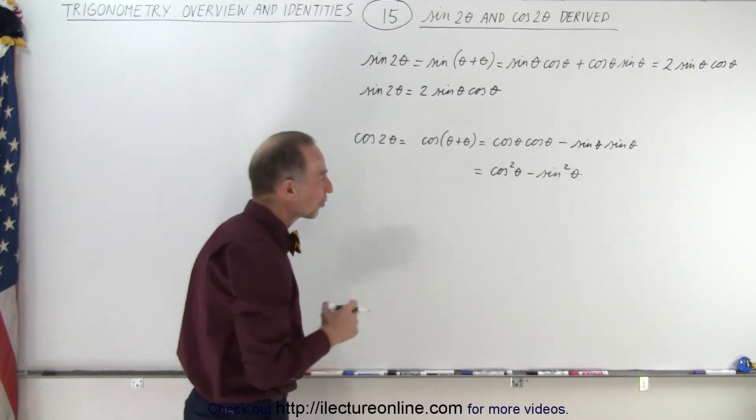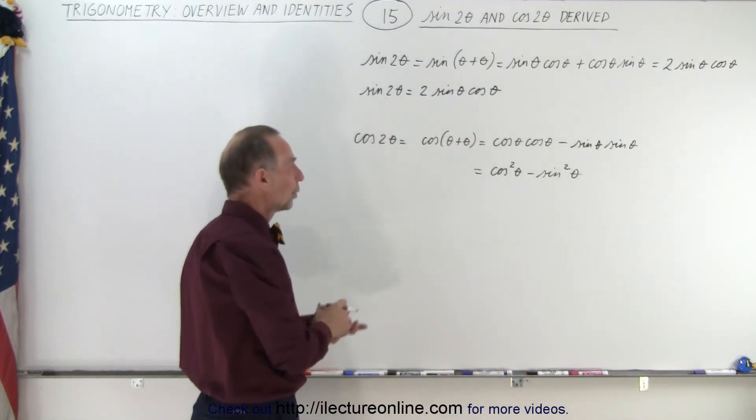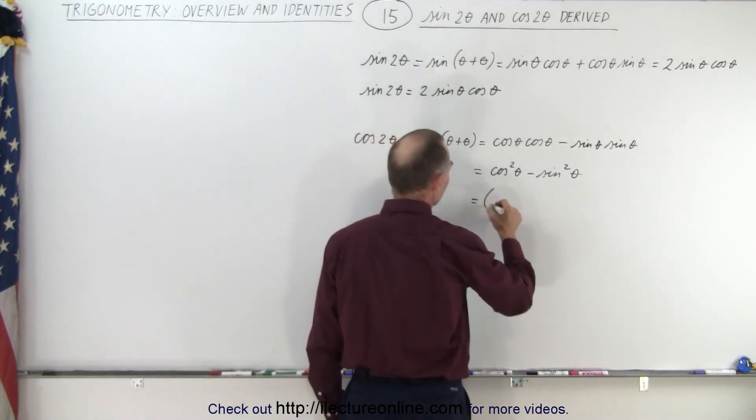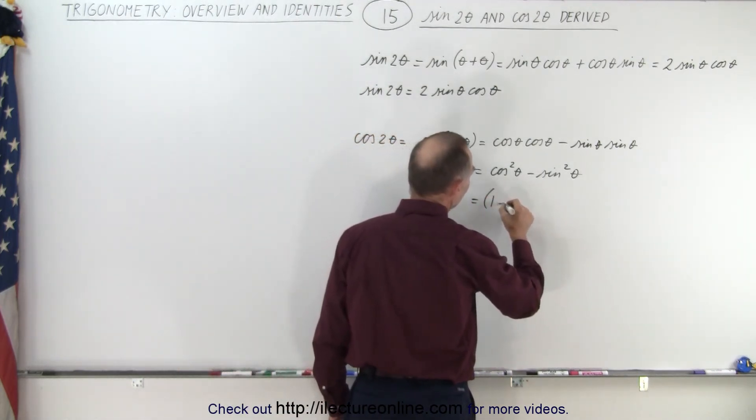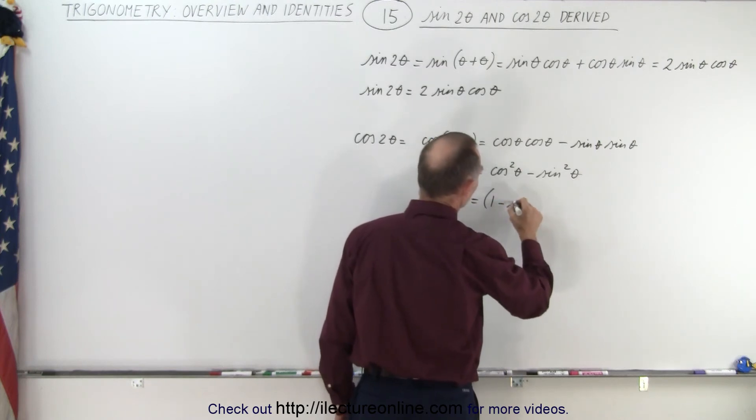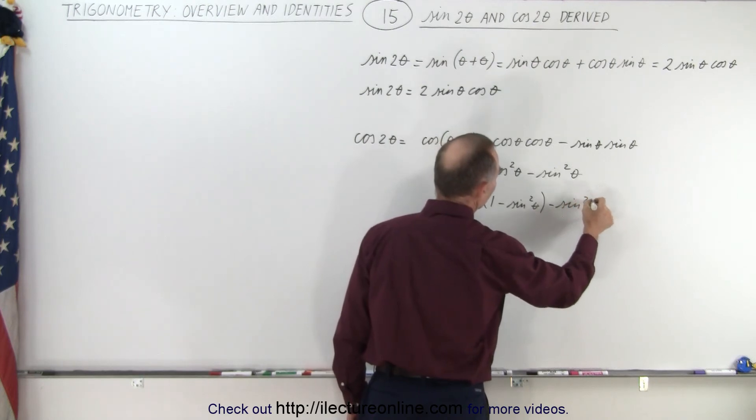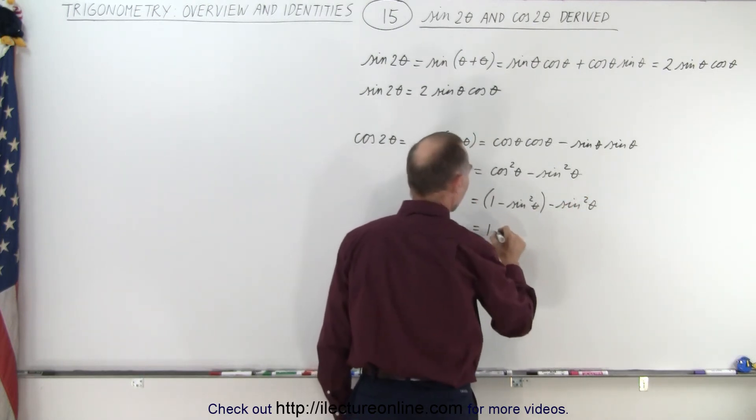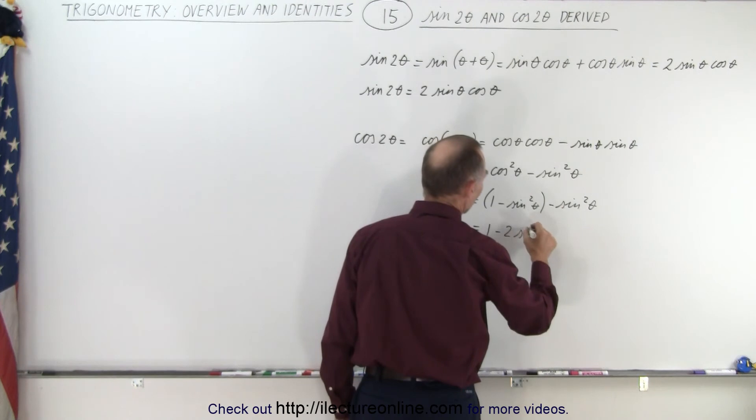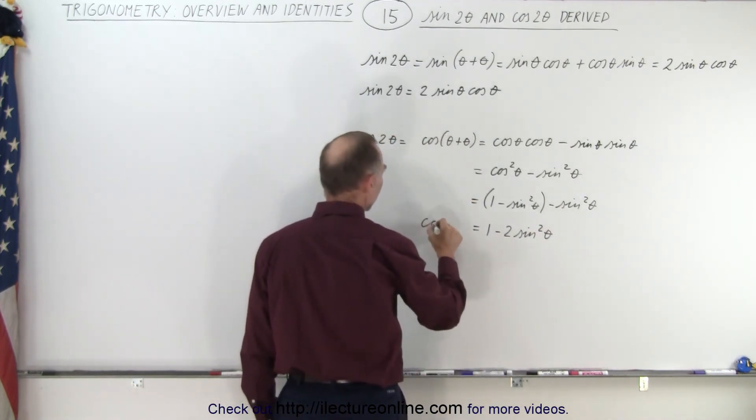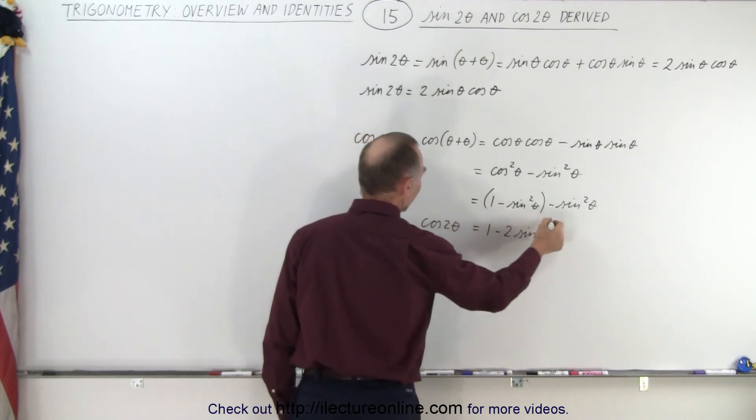We can write this as one minus the sine squared of theta, minus the sine squared of theta. This could be written as one minus two times sine squared of theta. That would be the cosine of two theta. So that's one form.